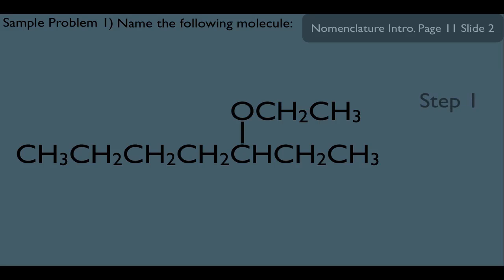So for step one, let's find the longer chain. And of course, that would be this right here. Because remember, this is the other side of the oxygen. So that's going to define the parent name of our molecule. If you count, there's seven carbons there in the box. So this is going to be heptane.